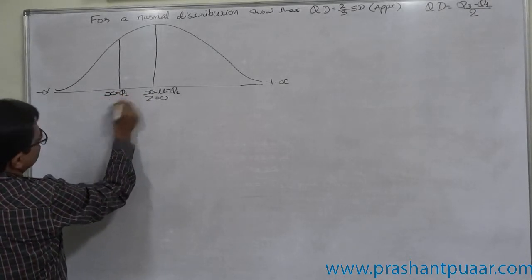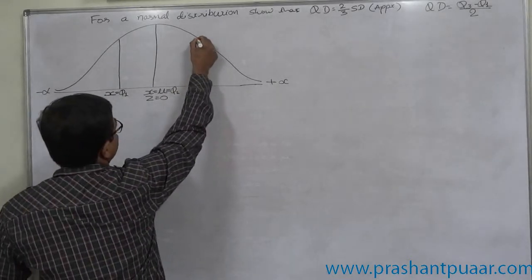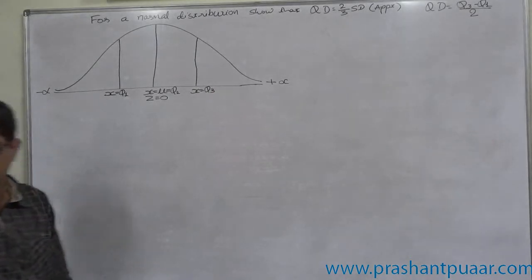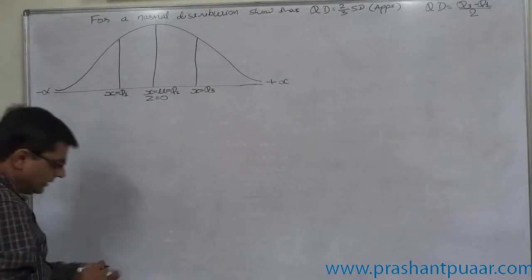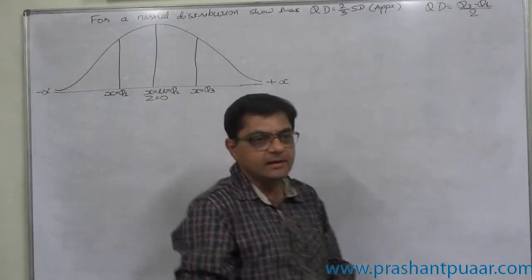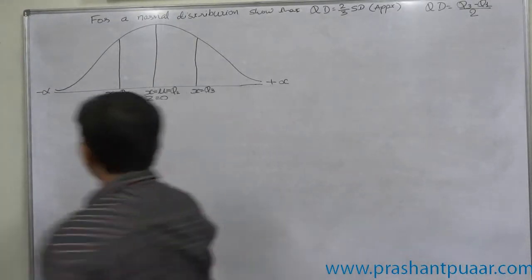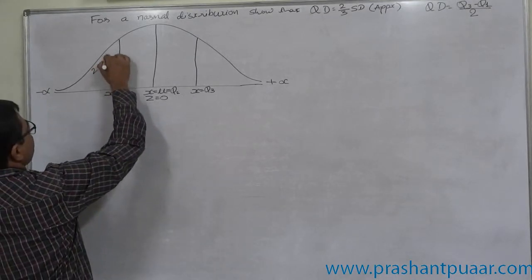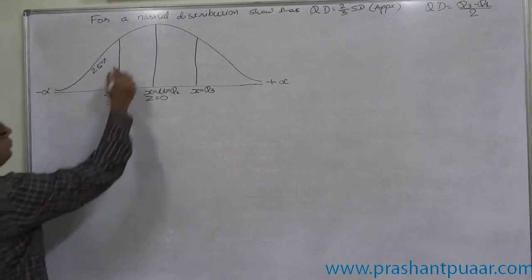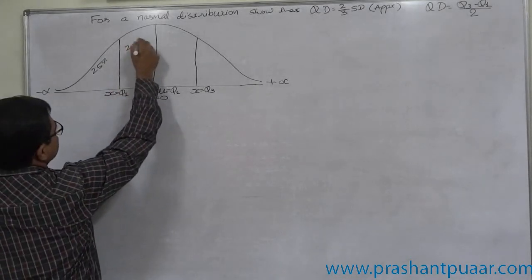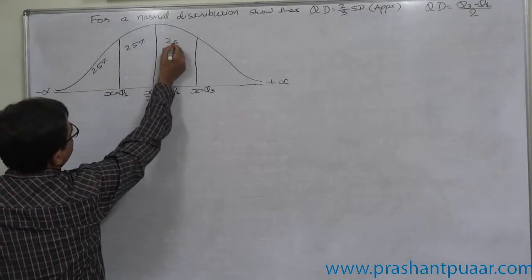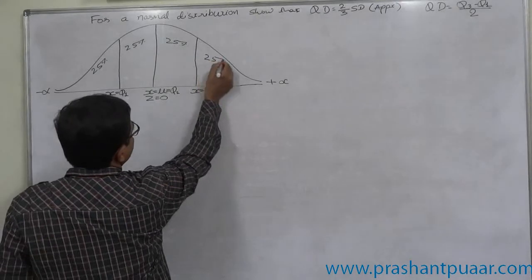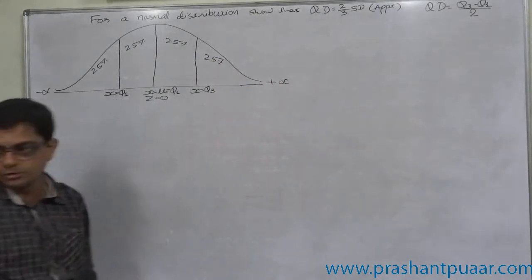X takes the value equal to Q1, and X takes the value equal to Q3. The interpretation of a quartile is that it divides the entire data into four equal parts, each containing 25% of the values. So 25% from lowest to Q1, 25% from Q1 to Q2, 25% from Q2 to Q3, and 25% from Q3 to the highest value.